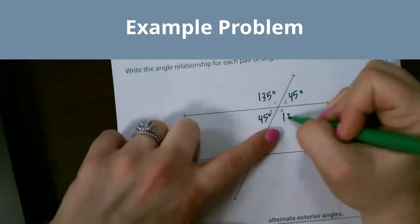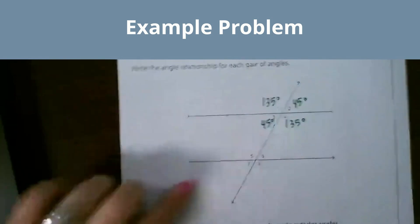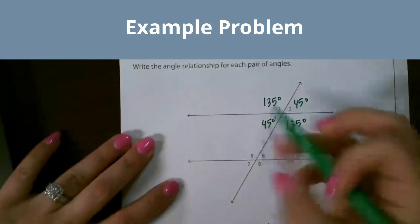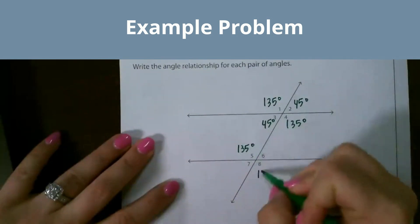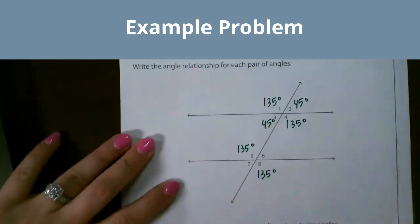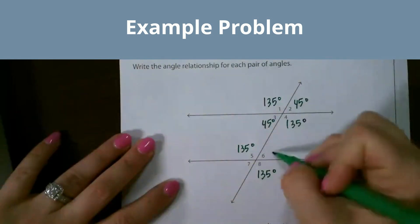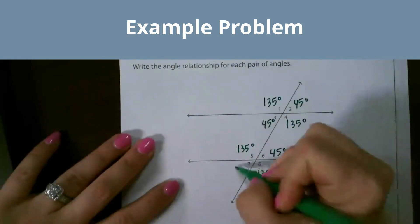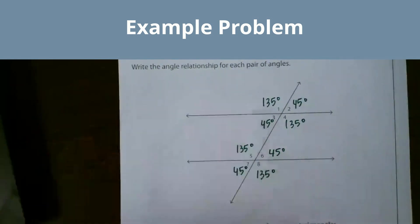And this one 135. Since these are corresponding angles, this would also be 135 as well as its vertical, and this is corresponding, so those two would be 45 as well.